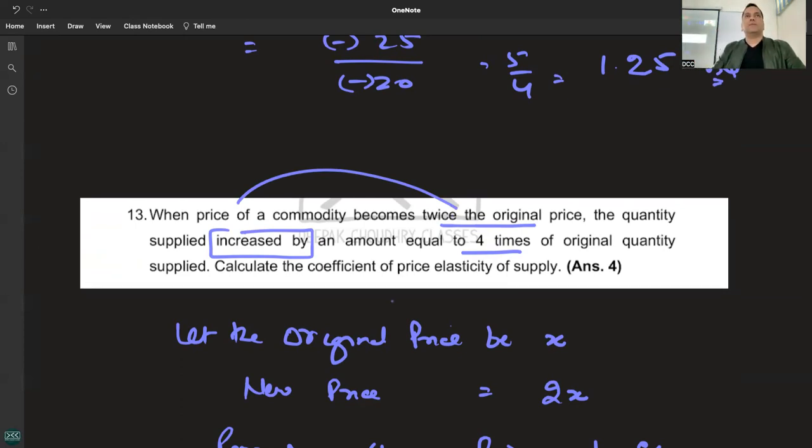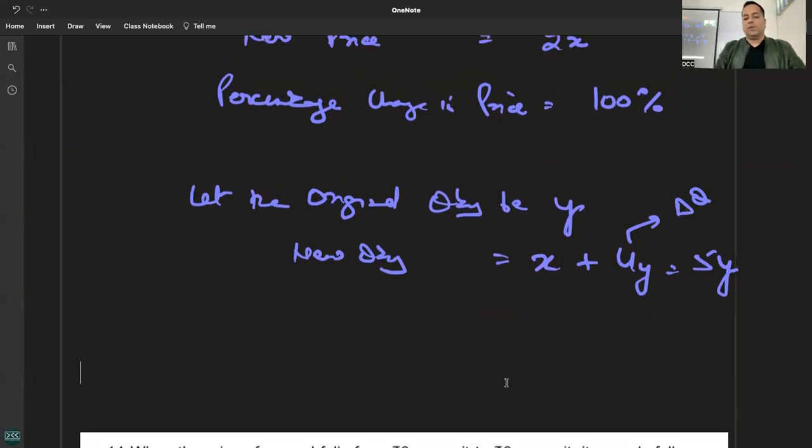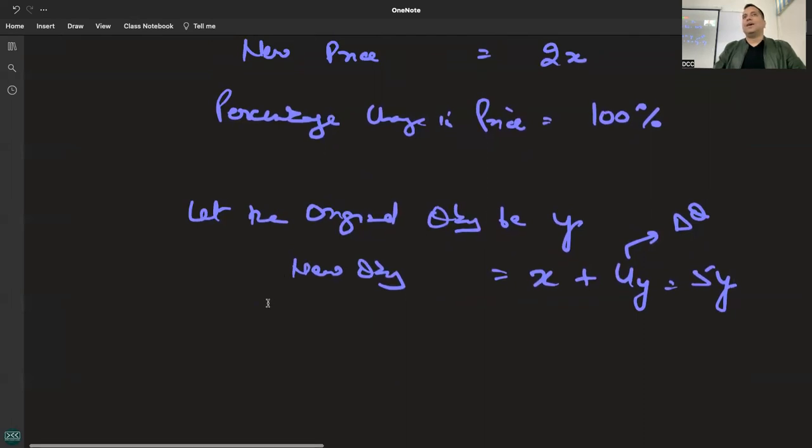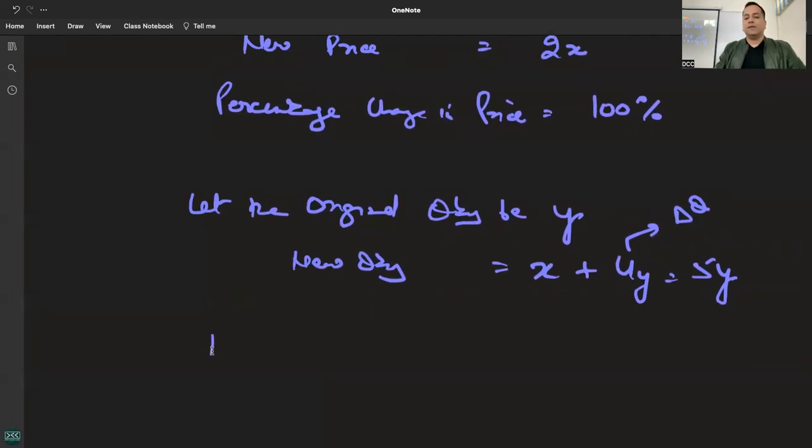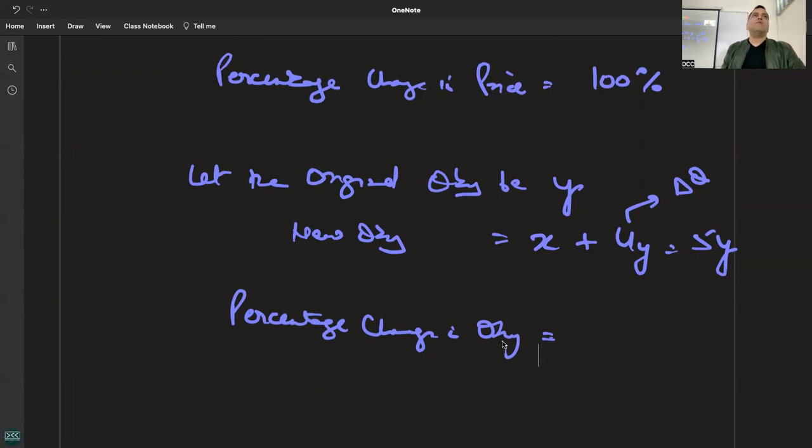Percentage change in quantity - if it was Y and becomes 5Y, it was 1 and becomes 5, so change is 4.